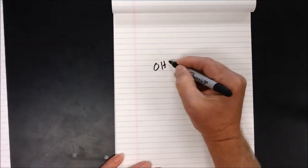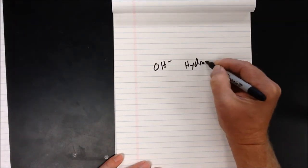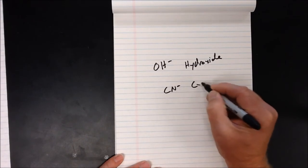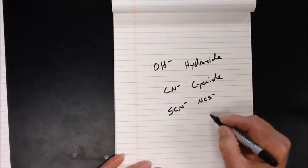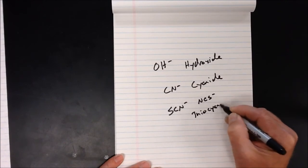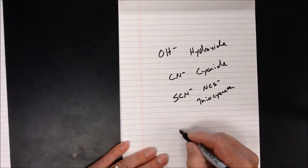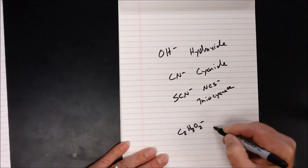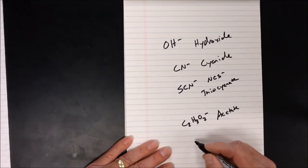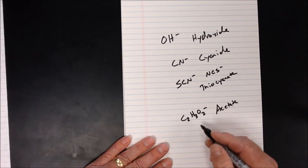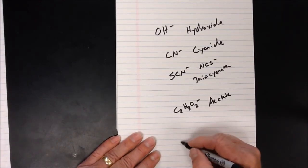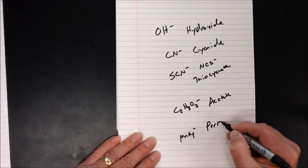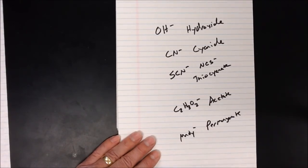Some polyatomic ions require direct memorization. OH minus is hydroxide. CN minus is cyanide. SCN minus — or NCS minus in some textbooks — is thiocyanate. C2H3O2 minus is acetate, written here in inorganic form with a minus one charge.